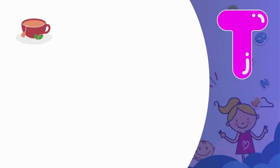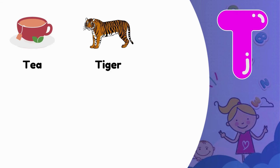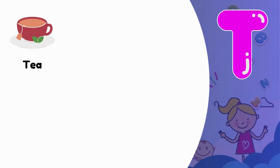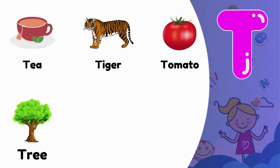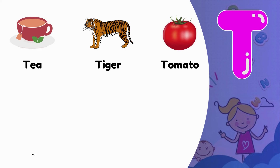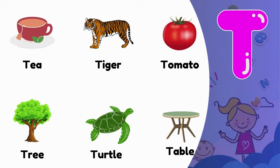T. T is for Tea. T is for Tiger. T is for Tomato. T is for Tree. T is for Turtle. T is for Table.